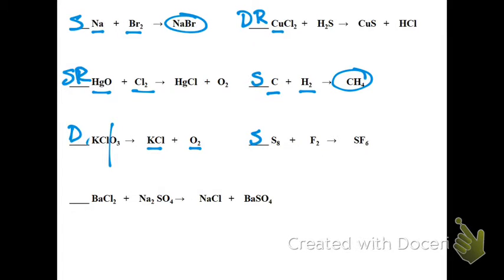And finally, barium chloride plus sodium sulfate, yields sodium chloride, plus barium sulfate. This is double replacement. So if you look at the starting and ending components, if you look at the products and the reactants, you should be able to figure out, using a few simple pictures, what kind of reaction you're seeing.